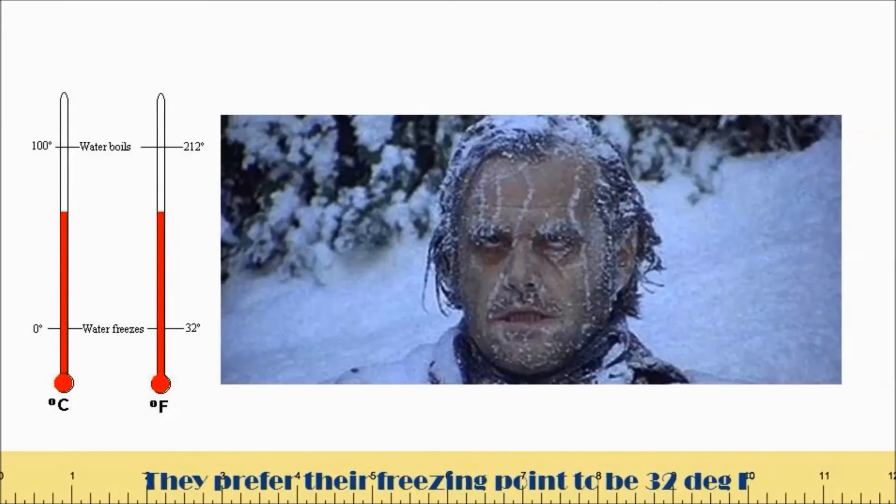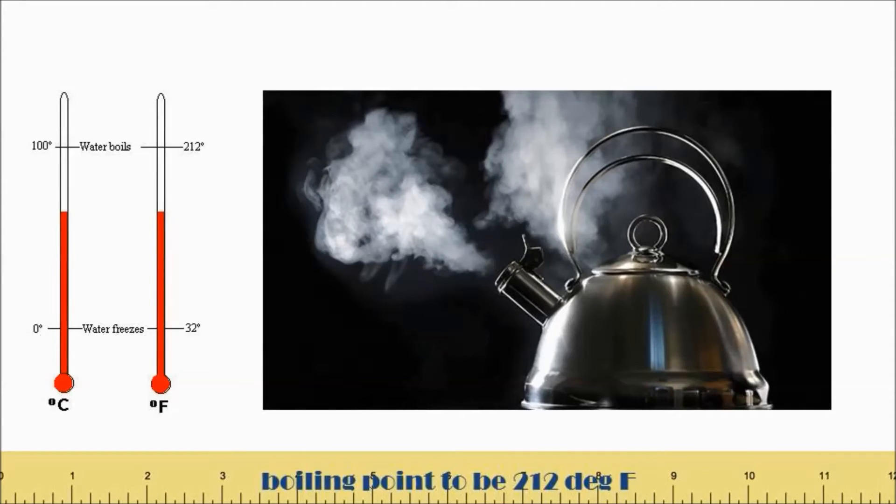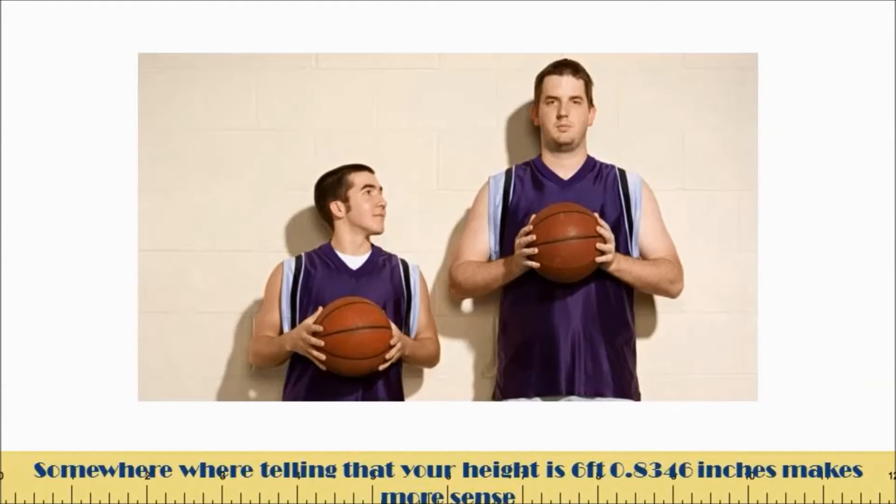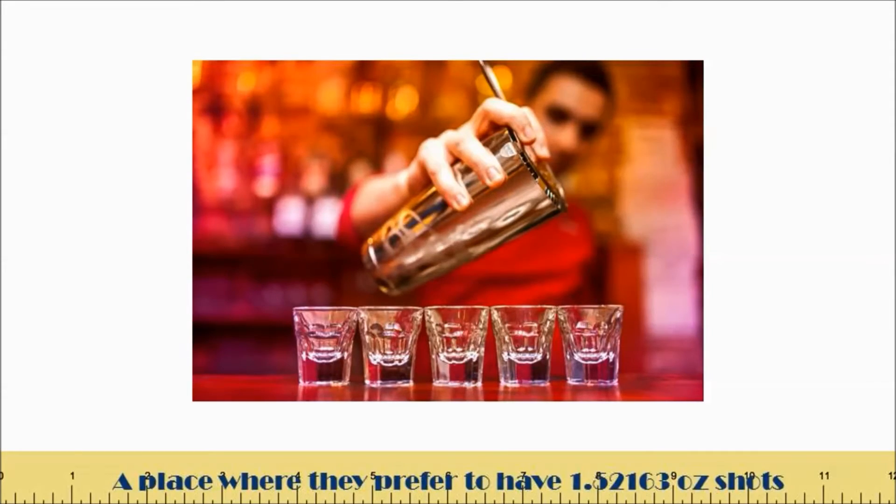They prefer their freezing point to be 32 degrees fahrenheit and boiling point to be 212 degrees fahrenheit. Somewhere where telling that your height is 6 feet 0.8346 inches makes more sense. Or saying that you weigh 154.324 pounds is normal. A place where they prefer to have their 1.52163 ounce shots.